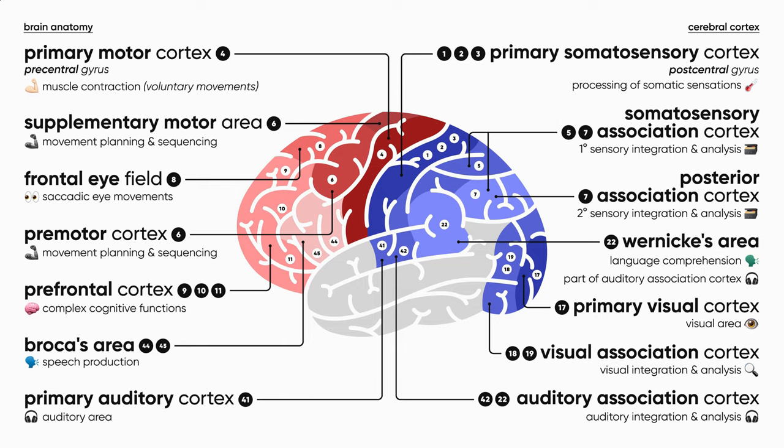Next time, we'll take a look at the anatomy and function of the basal ganglia, which, like the cerebral cortex, consists of grey matter. And if you need PDF notes for this or other videos, check out my Patreon profile. See you next time!